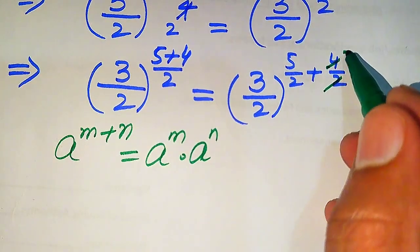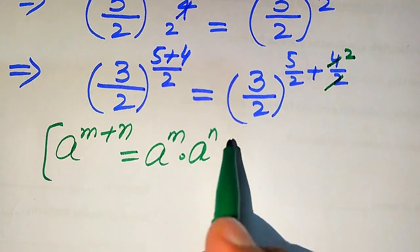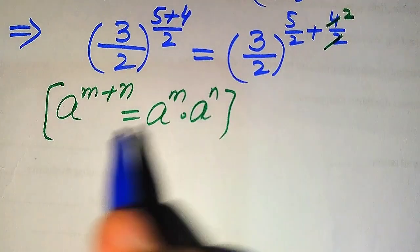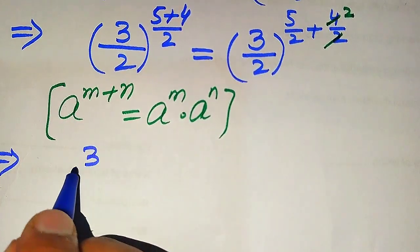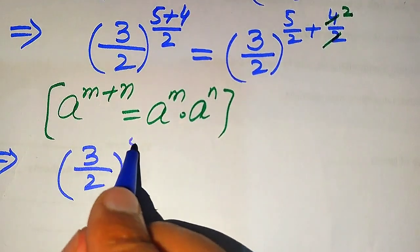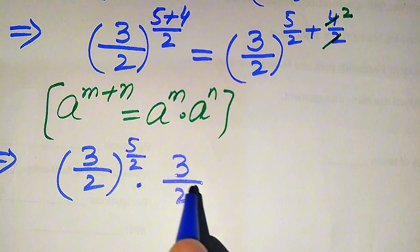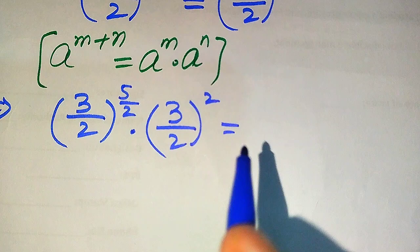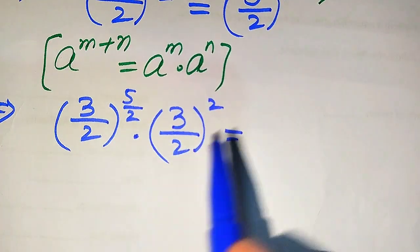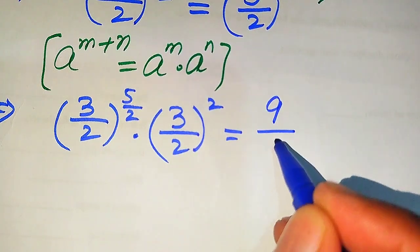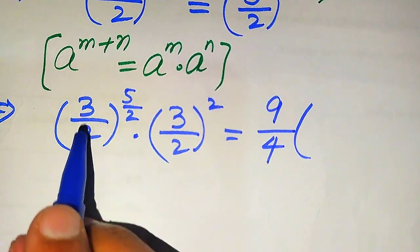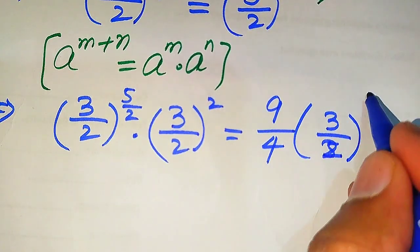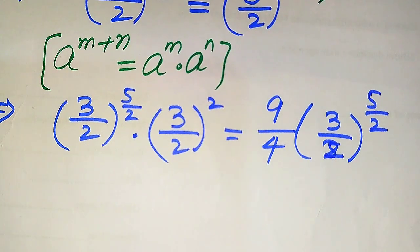Note that 4 over 2 simplifies: 2 times 2 becomes 4, and the 2s cancel. Applying this exponential law to the above expression, it is written as (3 divided by 2) to the power of 5 over 2, multiplied by (3 divided by 2) to the power of 2. When we separately apply this power on the second term, 3 squared becomes 9 and 2 squared becomes 4. So we have 9 over 4 multiplied by (3 over 2) to the power of 5 over 2.